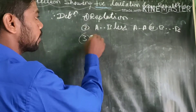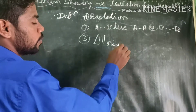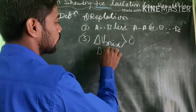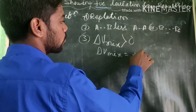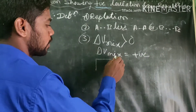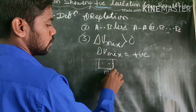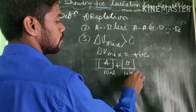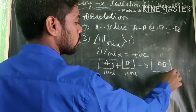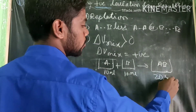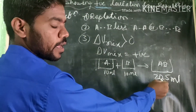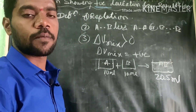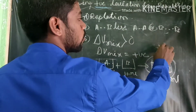The third characteristic: ΔV_mix is greater than zero. It means the volume increases after mixing. For example, if solution A is 10 mL and solution B is 10 mL, after mixing the AB solution is around 20.5 mL — the total volume increases. Therefore, such solutions are called positive deviation solutions.